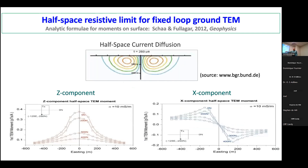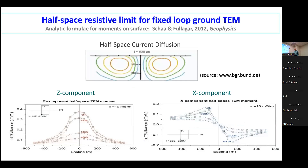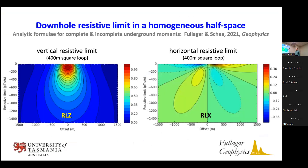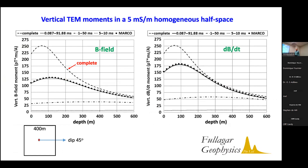This illustrates the response from a half space in the resistive limit, showing the Z component and X component responses both on the surface and underground. What I think is interesting is that even though this is the resistive limit — when we're talking about the mathematical resistive limit and integrating over all time — we're still getting the impression of a current system quite concentrated close to the surface. It's interesting that even integrating over all time we're still dominated by the near-surface current system. In real usage we'll be looking at some finite late time range.